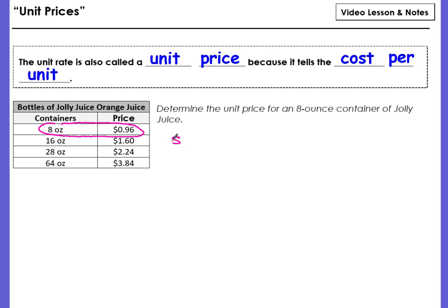So if we write our rate, it's 96 cents because money goes on top for 8 ounces, and we want to know what is the cost for one ounce. What is this cost?